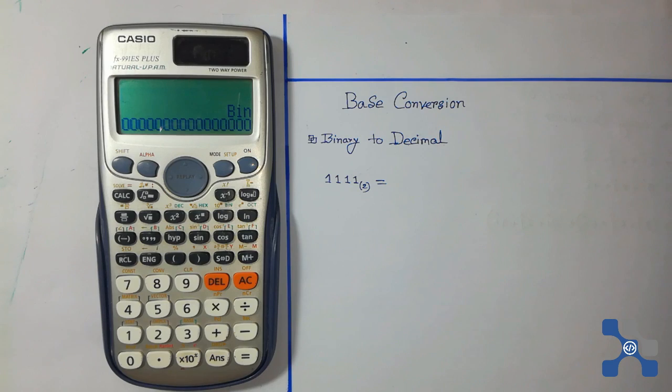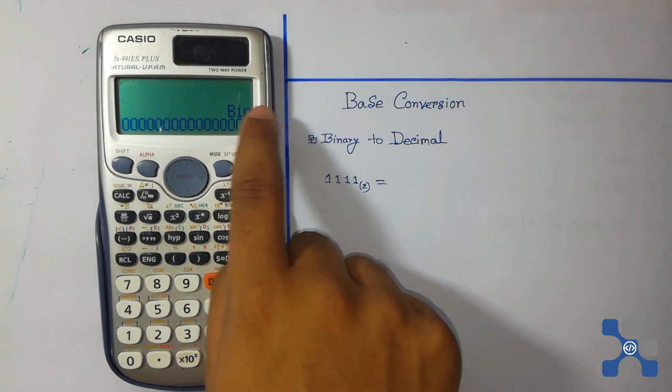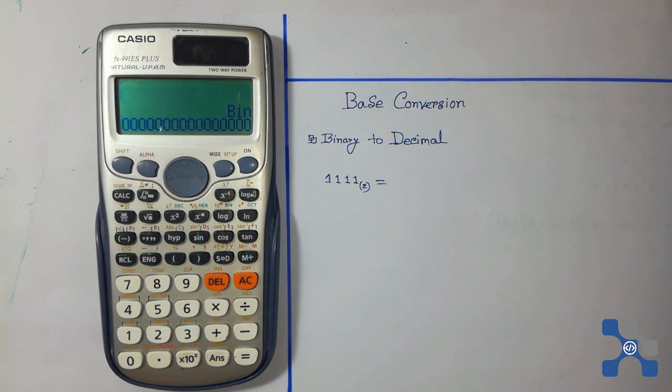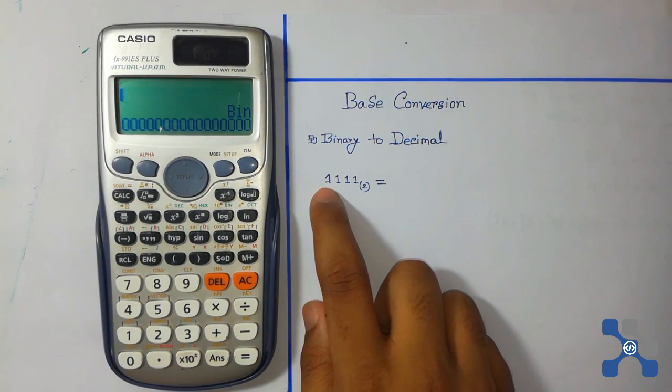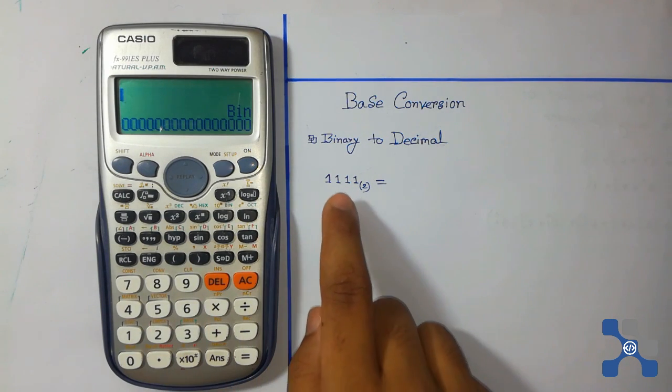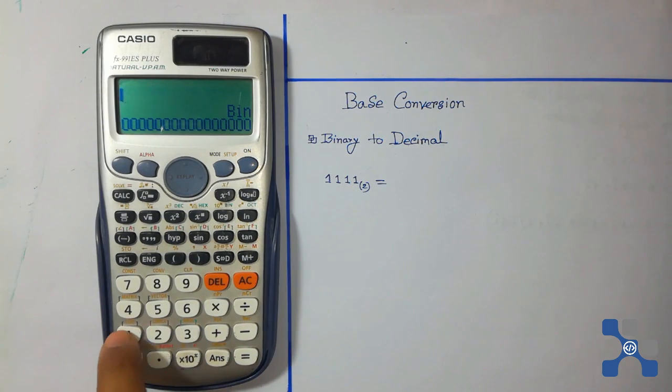We see that here is binary in the shortcut. So enter the binary number. Here it is: one, one, one, one.